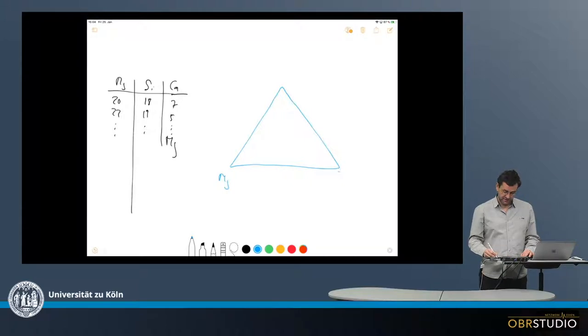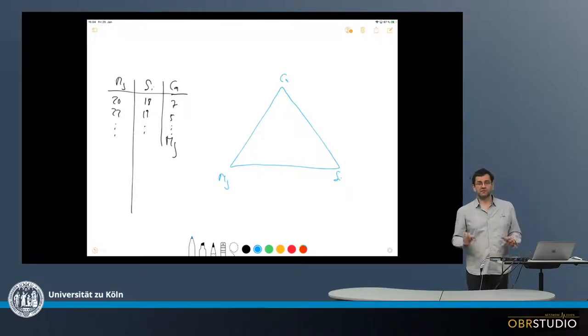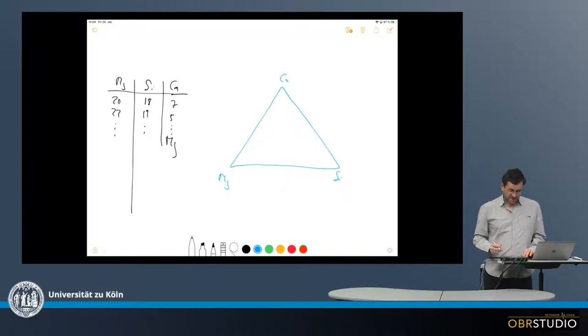So in this one, there's then magnesium, silicon, and calcium. Now, the question is, how do we plot data into this ternary plot here? First, we need to recalculate our data here.